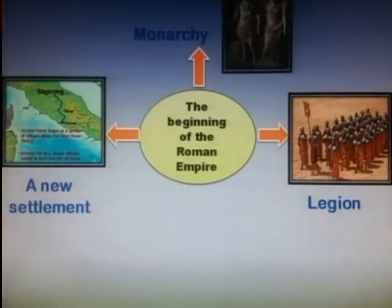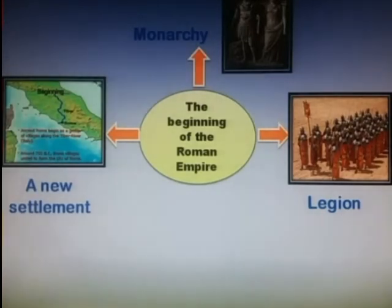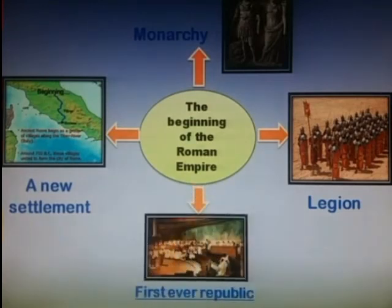The king ruled the empire as the sole monarch. But due to corruption and cruelty by the rulers, monarchy was gradually replaced by the Roman Republic. This was the first ever republic in the world. The Roman Republic was a political system or form of government.